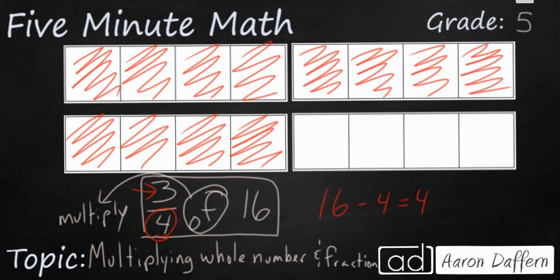So what I did is I divided 16 into groups of four, and then I took three of those groups of four. So I'm going to multiply that by three because I need three groups of four, and that is going to give me a total of 12. So 3 fourths of 16 equals 12.